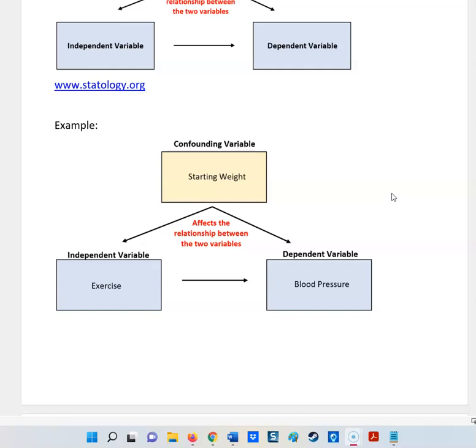If you want to find a confounding variable, you wouldn't say, well, some people might lie about the amount of exercise they do. That's not a confounding variable. That's a problem people have with studies of people not being honest. The confounding variable is something that the study does not talk about, but could change the outcome.